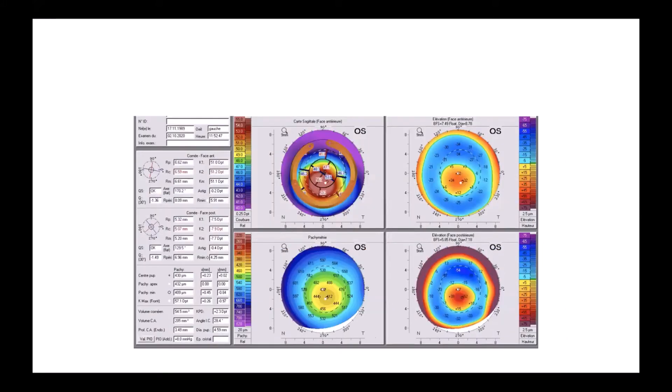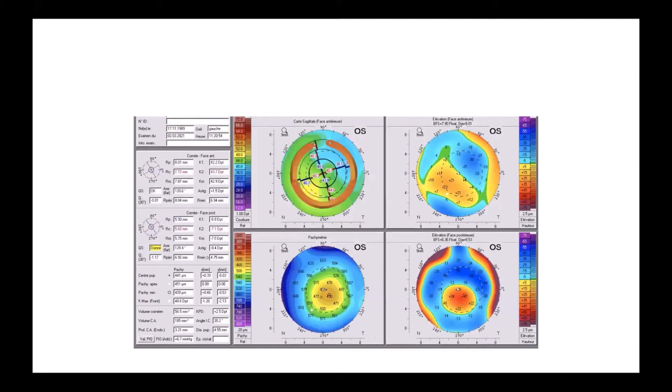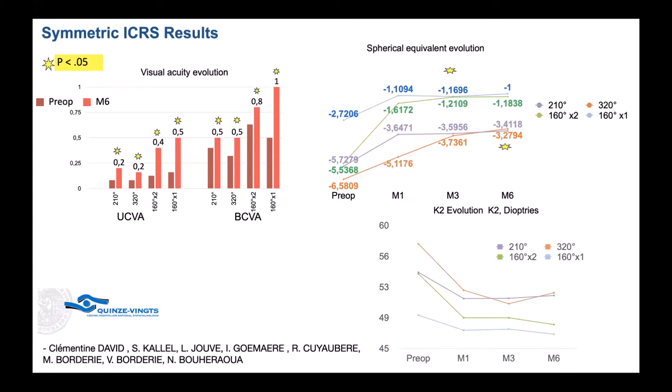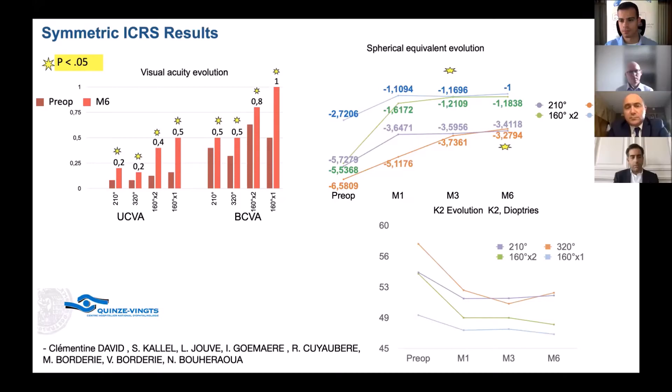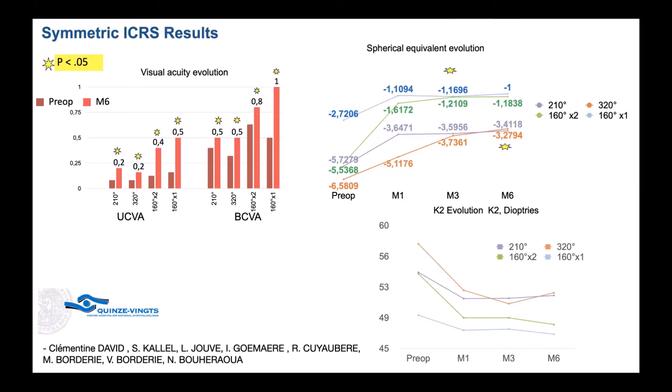This is a nipple shape and this is the result four months after. We made our first study in the department with the symmetrical intracorneal ring segment. We observed the best corrected and uncorrected visual acuity, best spherical equivalent evolution, and less keratometry in all our cases and all our rings.